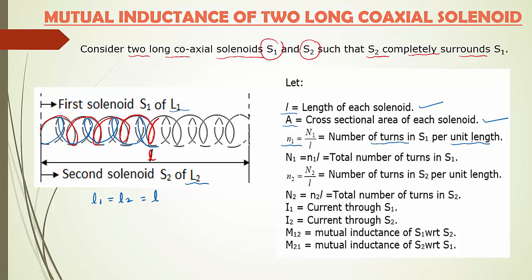Small n1 gives the number of turns per unit length for S1, where n1 = N1 / L. Capital N1 gives the total number of turns, so N1 = n1 × L. Similarly for solenoid S2: n2 = N2 / L, and N2 = n2 × L, giving the total number of turns in S2. I1 is the current through S1 and I2 is the current through S2.